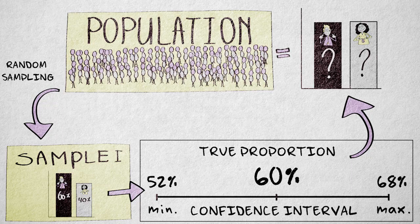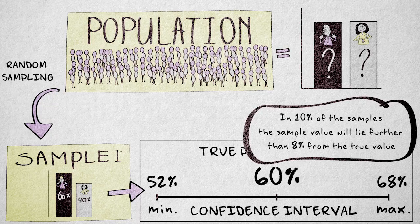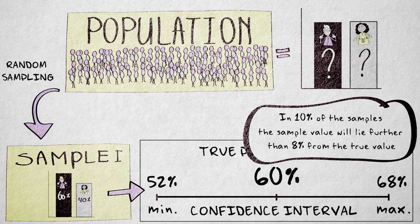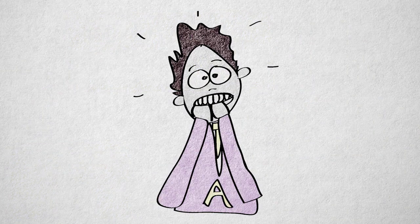Of course, this particular interval could be wrong, because in 10 percent of the samples, the sample value will lie further than 8 percentage points from the true value. This could be one of those samples, so we can never be certain.